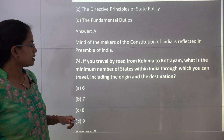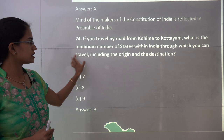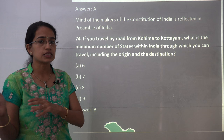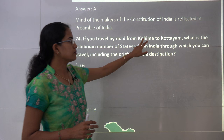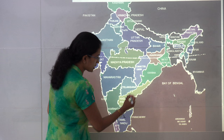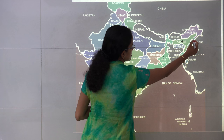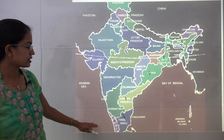The next question asks about the minimum number of states you pass through traveling by road from Kottayam in Kerala to Kohima in Nagaland. Key points: it asks for the minimum number and includes origin and destination. Starting from Kerala, you pass through Tamil Nadu, Andhra Pradesh, Odisha, West Bengal, Assam, and reach Nagaland — that is seven states in total. The correct answer is seven.